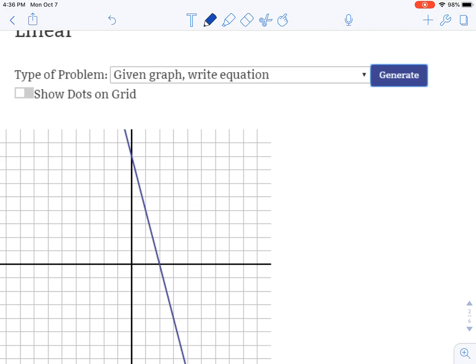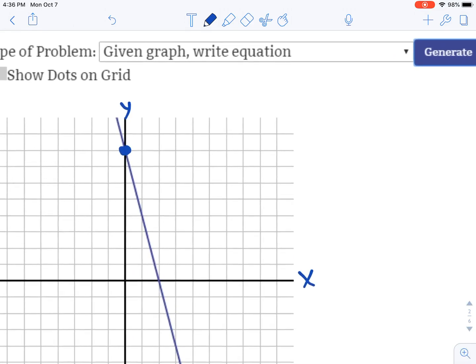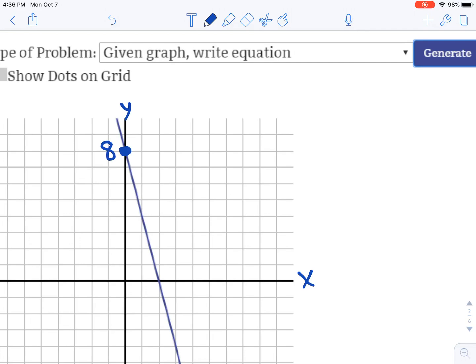The y-axis is here in the middle, and this is the x. We're going to first find the y-intercept. It crosses right here at a nice point, which is positive 8. So that's our y-intercept at 8.